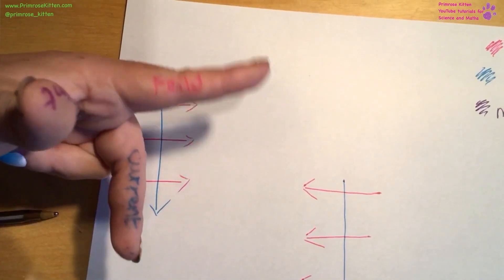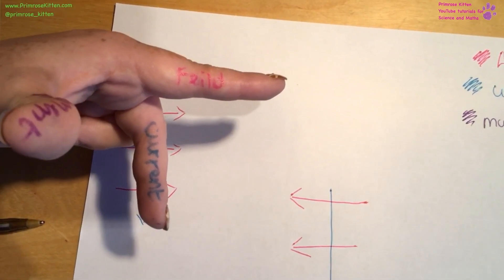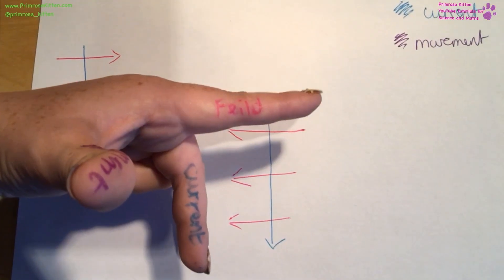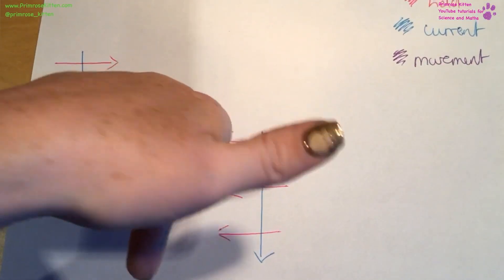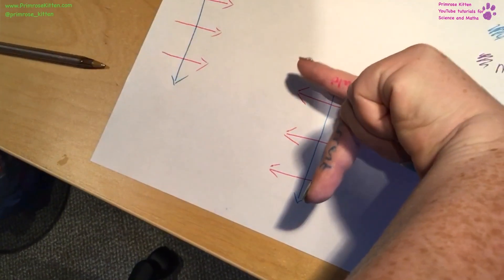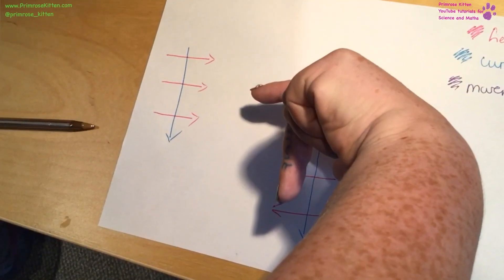So, first of all, it's nice and easy. My field is going in the right direction, my current is going in that direction, so the movement of the force is going upwards. This one here is a bit more complicated, because this finger needs to be pointing in that direction. My current needs to be going down, and then my thumb is going into the page.